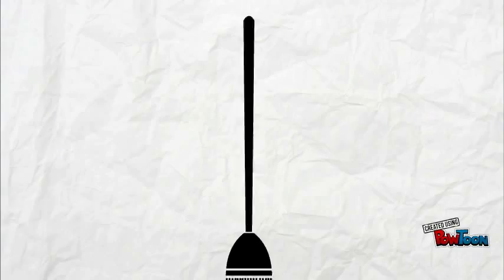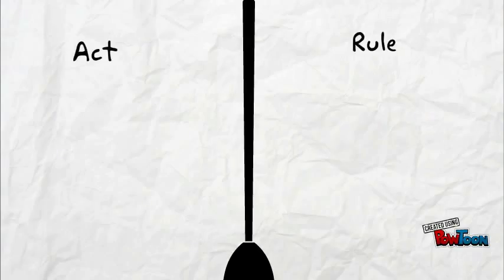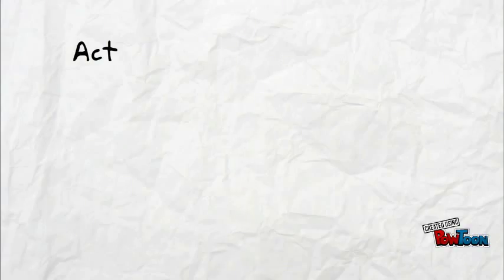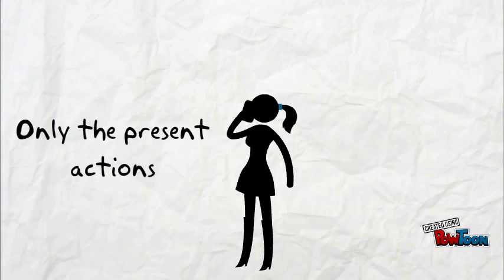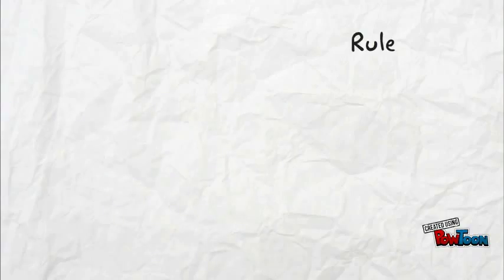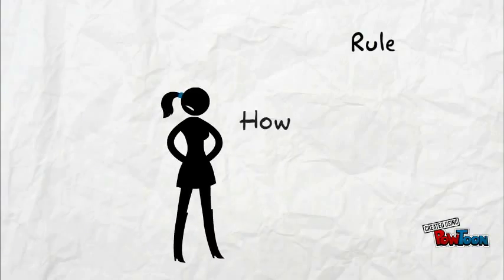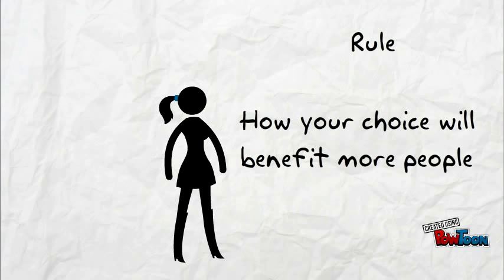This theory is divided in two parts: act and rule. The main difference between the two is that act considers only the present actions without thinking of the future consequences, while rule will look at the future and how your choice will benefit more people in the long run.